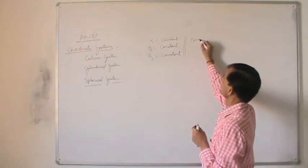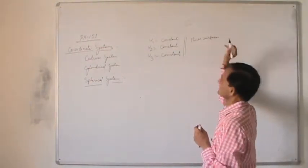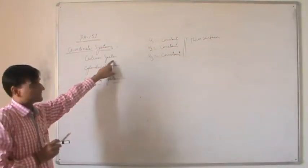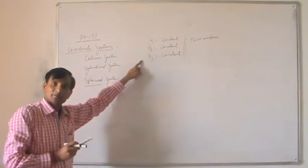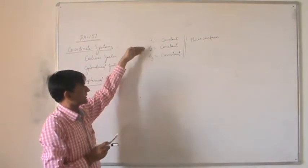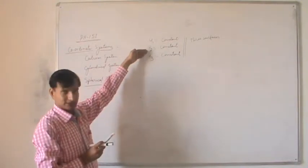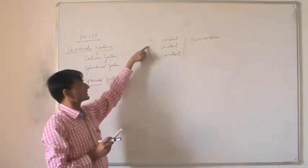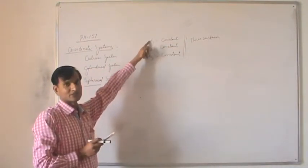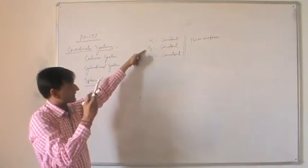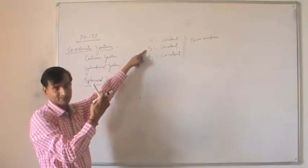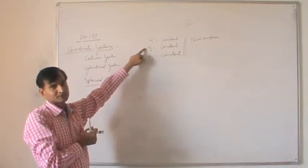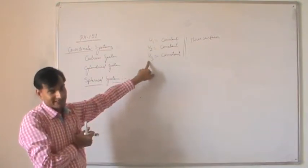These are three surfaces. In case of the Cartesian system, these three surfaces are planes: the YZ plane, XZ plane, and XY plane. In case of the cylindrical system, these three surfaces are: a cylinder of radius rho, a half plane passing through the Z axis making an angle phi with the X axis, and the XY plane.